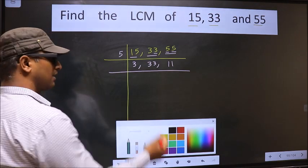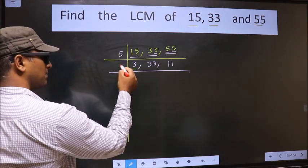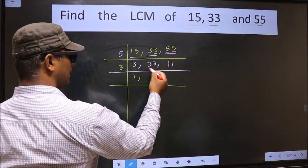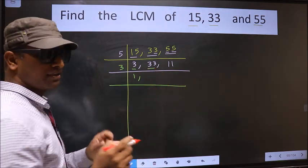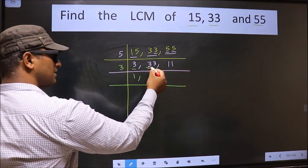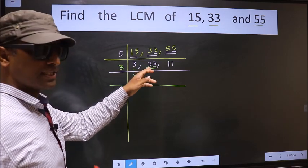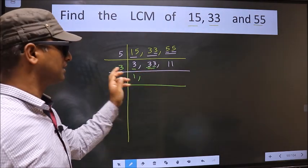Next, now here we have 3. 3 is a prime number, so 3 once 3. The other number, 33 - you observe here, each digit is 3, so this number is divisible by 3.